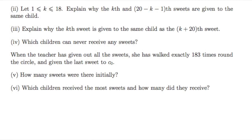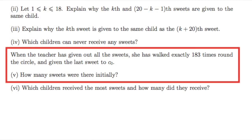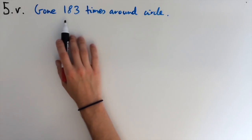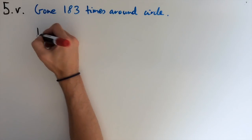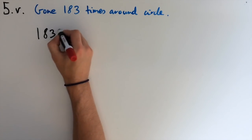So now we're told that when the teacher's given out all the sweets, she has walked exactly 183 times around the circle and given the last sweet to c0. For part v, we need to work out how many sweets there were initially. If the teacher's gone around the circle 183 times, as there's 10 children in the circle, this means that she's taken 1830 steps.